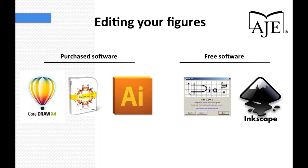There are several programs you can use for secondary editing of figures. Here at AJE, we prefer Adobe Illustrator. Other purchase software includes CorelDRAW and Microsoft Expression Design. Free software options include DIA and Inkscape. Once you've created your graph, you can save it as a vector file type — preferable for poster creation — or as a pixel-based file type at the appropriate resolution, and bring it into these secondary editing programs to enhance your figure even further.